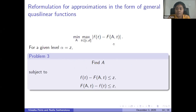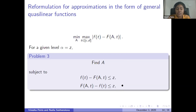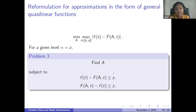What if our approximation is formulated as a general quasi-linear function f(A,t), quasi-linear with respect to capital A? Since f(A,t) is quasi-linear, the feasible set described by these inequalities is convex. We have these types of inequalities for each t in the interval [c,d], and we need to find a point in the intersection of this convex set. So we are extending the bisection method — developed for generalized rational functions — to approximations in the form of a general quasi-linear function.